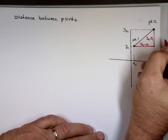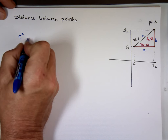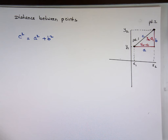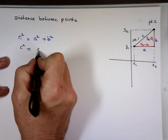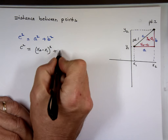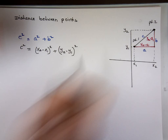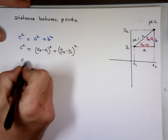Remember Pythagorean's theorem? Pythagorean's theorem says if we call this side C, this is A and this is B, it says C-squared equals A-squared plus B-squared. So C-squared equals — what is A here? X2 minus X1, squared. And what is B here? Y2 minus Y1, squared. And if you want to find C, you square root both sides.